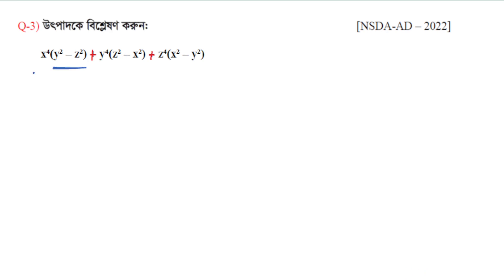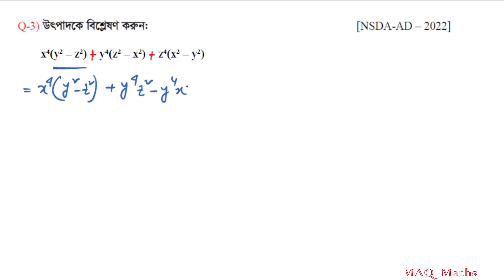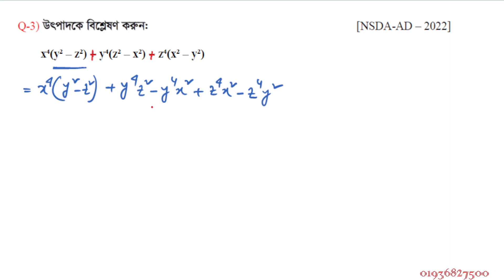We rearrange the terms: looking at z² and y⁴(z² − x²), then y to the power 4 times z squared minus y to the power 4 times x squared, plus z to the power 4 times x squared minus z to the power 4 times y squared. We can identify (y² − z²) raised to power 1, and x to the power 4 times (y² − z²) as a starting grouping.